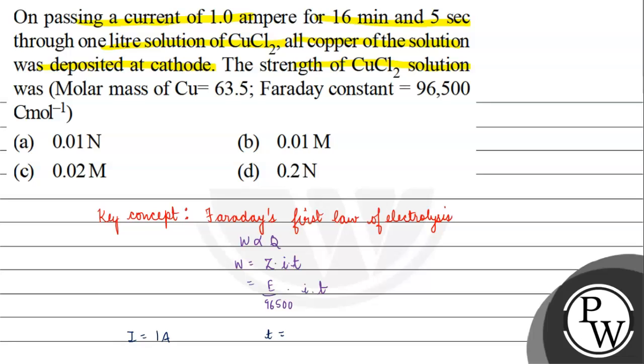Let's basically convert this: 16 into 60 seconds plus 5 seconds. We will get 965 seconds for time.